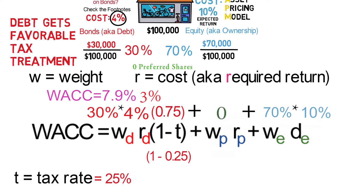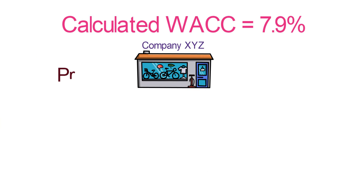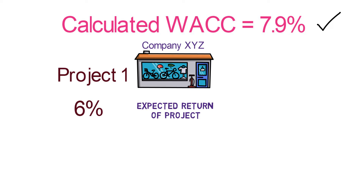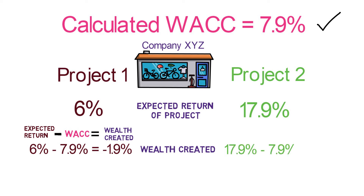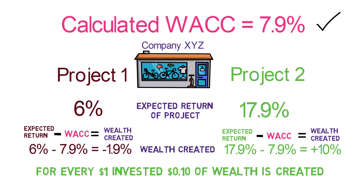As you can see, this formula is not terribly difficult. At the end of the day, WACC tells you the minimum amount a company needs to return. The company can use this as a way to determine if they should invest in a project. So if company XYZ calculates their WACC to be 7.9% and they find a project that's going to return an estimated 6%, they shouldn't do it — they would be destroying wealth since the capital costs them 7.9% but they'd only be earning 6%. But if the project would earn 17.9%, they should probably do that, since they would be creating wealth. That means for every dollar the company invests in the project, 10 cents in wealth will be created.